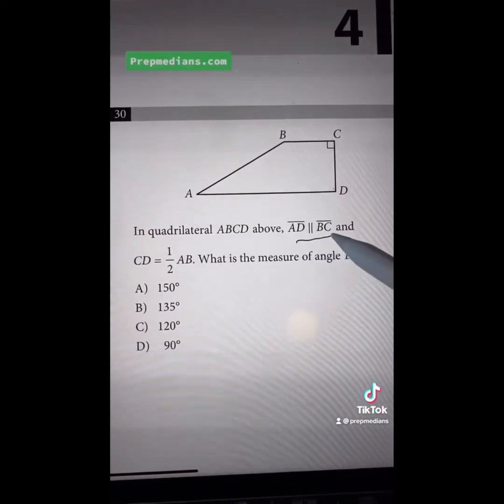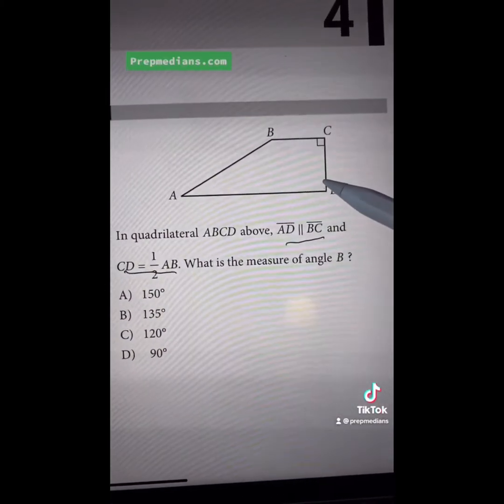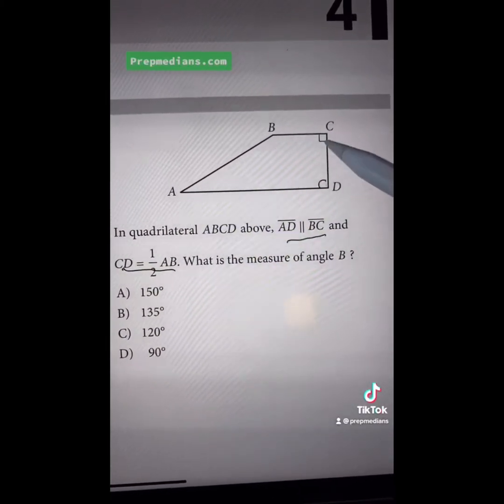It tells us that AD is parallel to BC, and CD is half of AB. Let's mark that up. AD has to intersect CD at a right angle because it's parallel to BC.